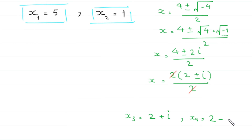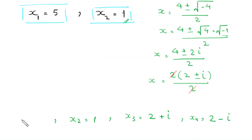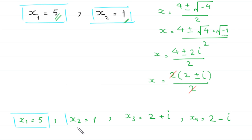So we have found all four solutions of this equation: x equals 5, x equals 1, x equals 2 plus i, and x equals 2 minus i.